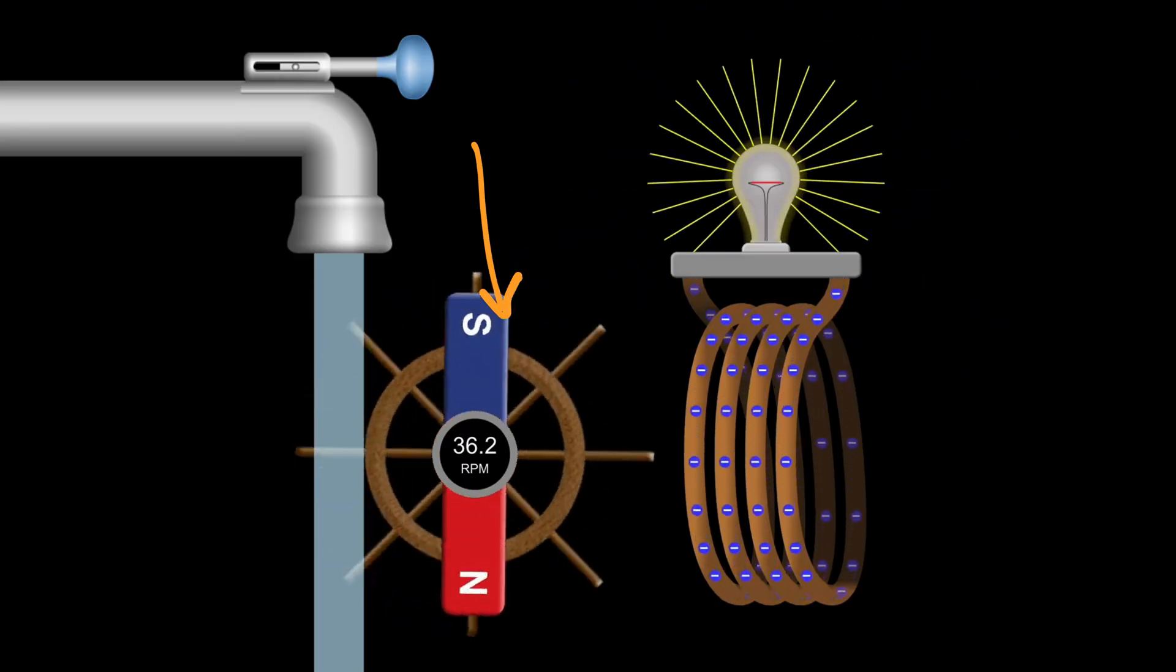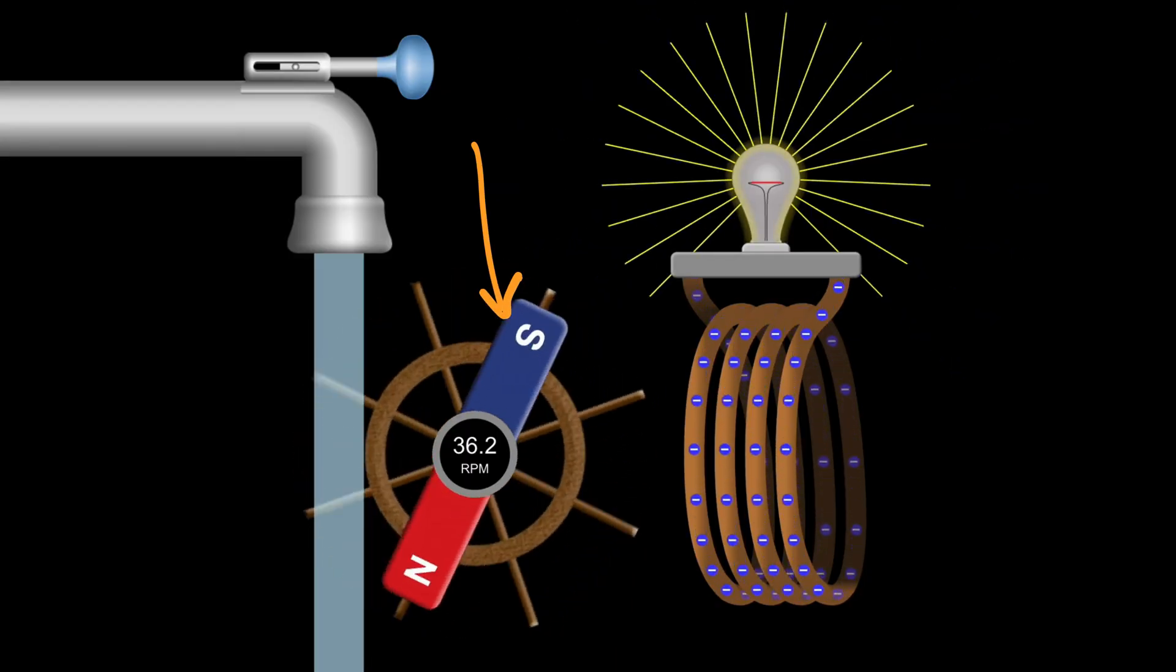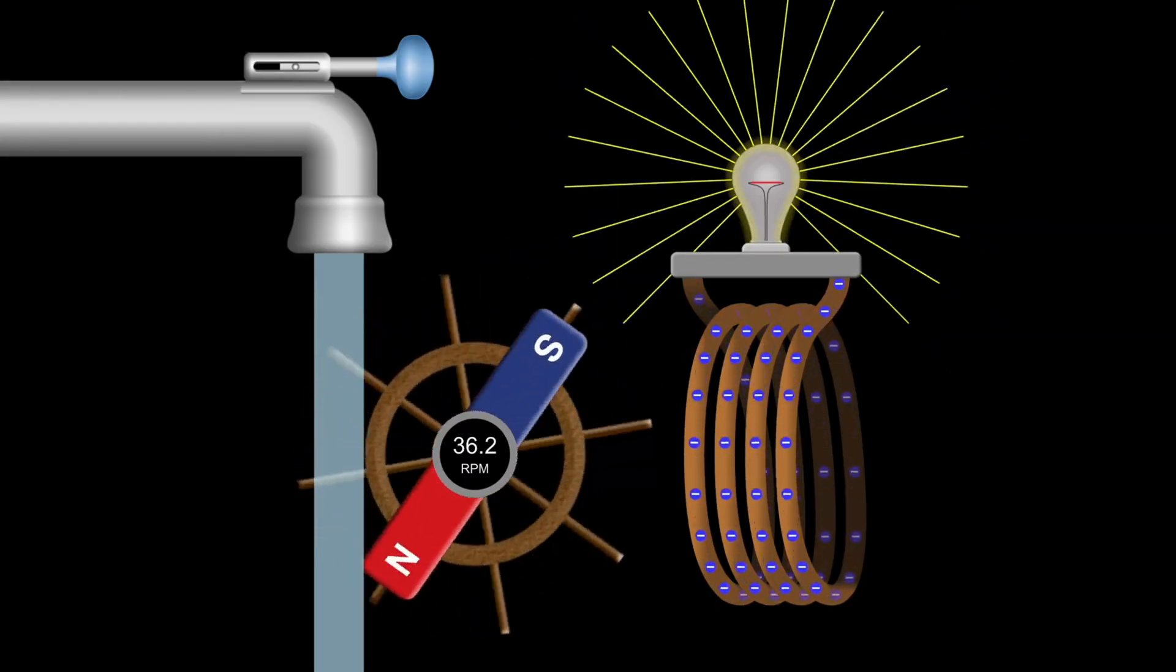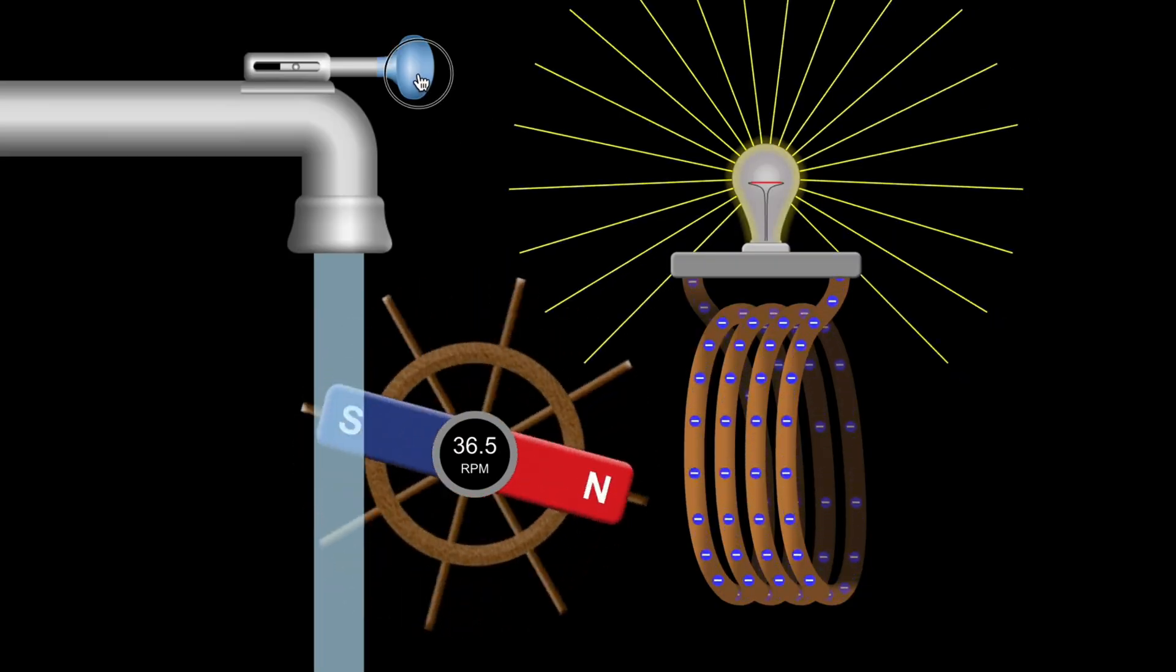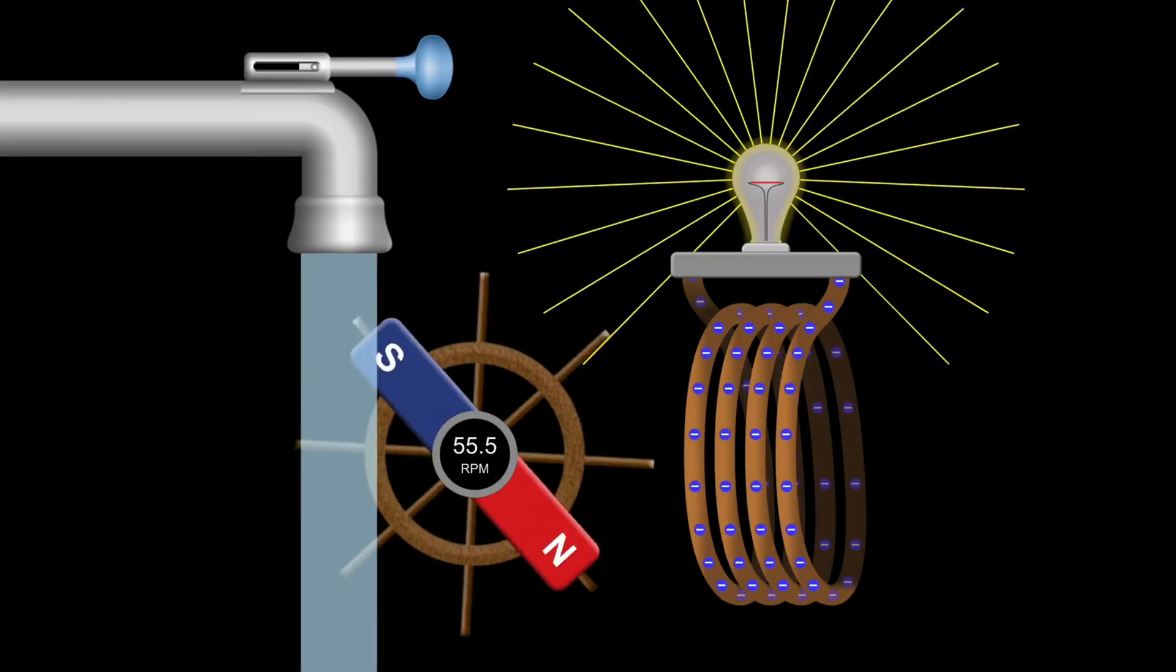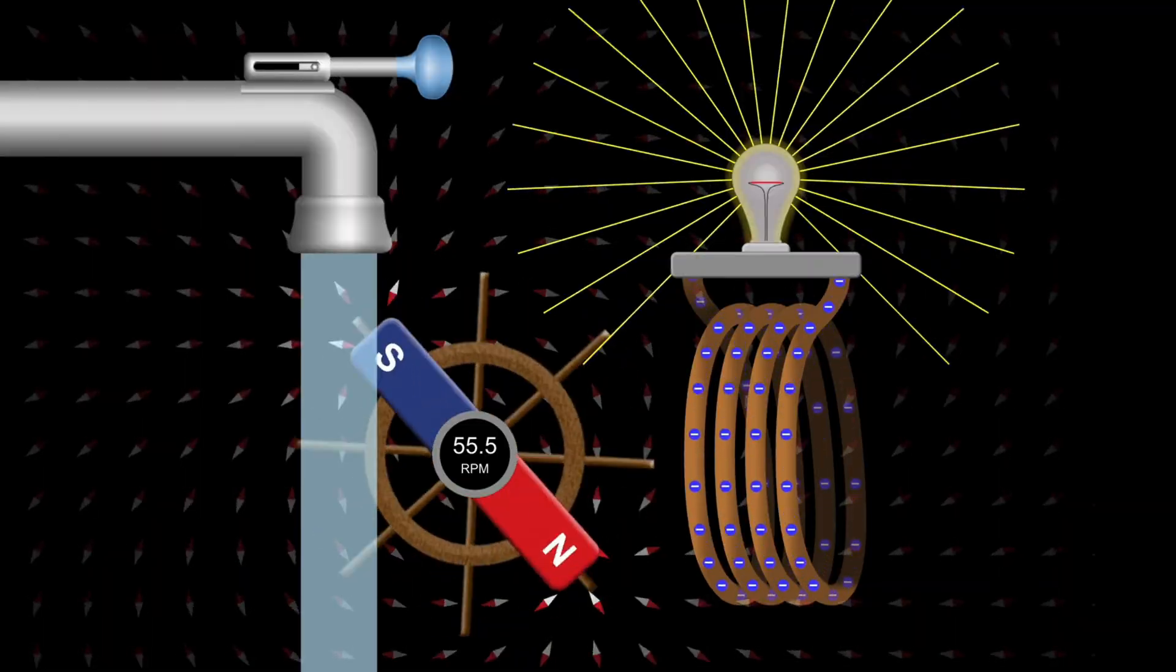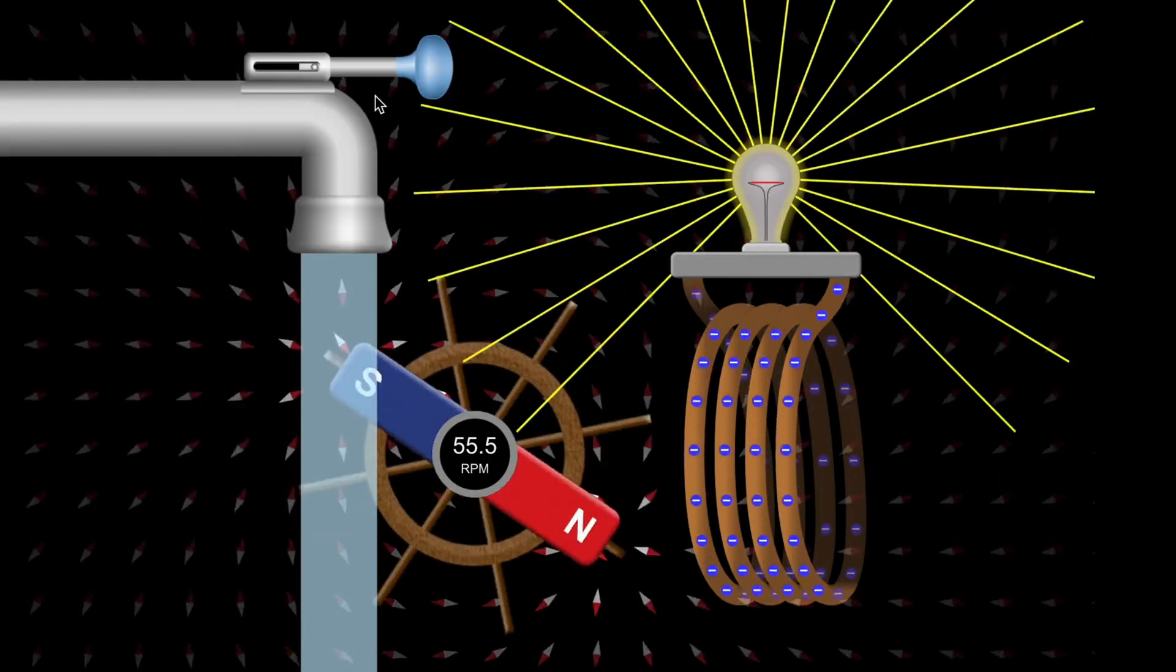Next, you turn your attention to the spinning magnet itself. Right now, it's rotating slowly. What if you spin it faster? You open the tap wider. The water flows harder. The wheel spins quicker. And the magnet now turns faster too.